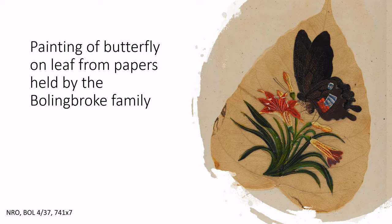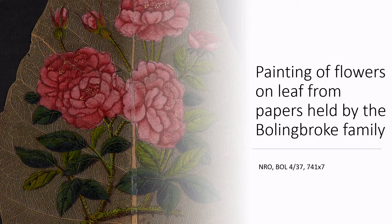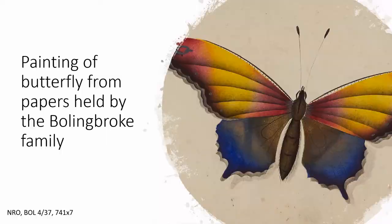The next two slides contain images of paintings made on real leaves. This delicate painting of a butterfly on flowers is from the Bolingbroke family collection. This detailed rose painting on a leaf, also from the Bolingbroke family collection, is contained within a 19th century album along with copies of verses and other paintings.